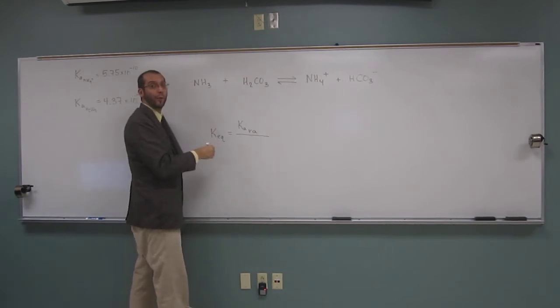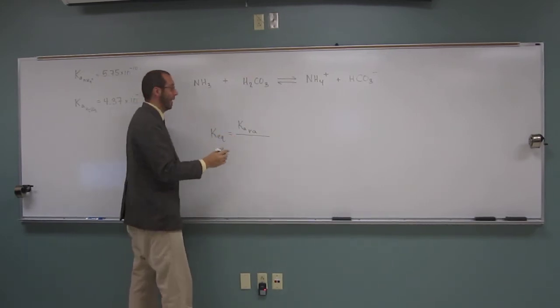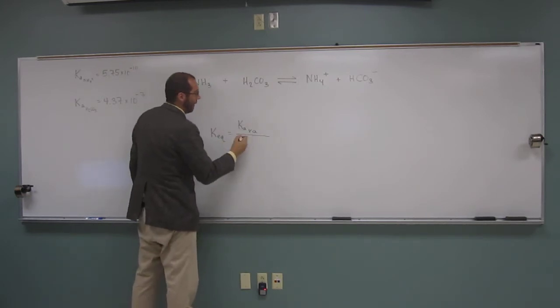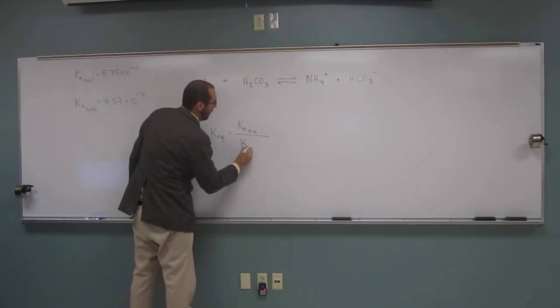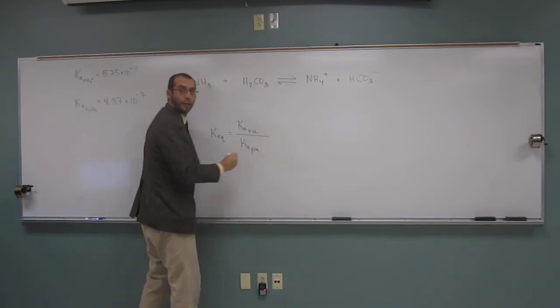If you just say reactants over product, people will be like, no, that's not right. So you've got to say Ka of the reactant acid over the Ka of the product acid.